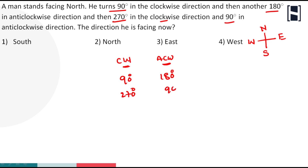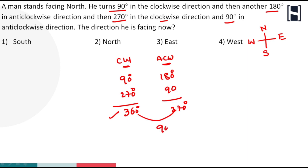So the clockwise direction total sum is 360 degrees. The anti-clockwise total sum is 270 degrees. The highest is clockwise direction, and the difference between clockwise and anti-clockwise is 90 degrees.